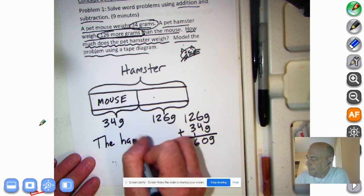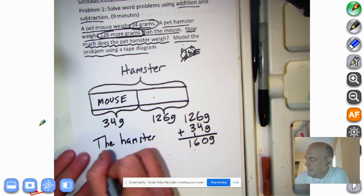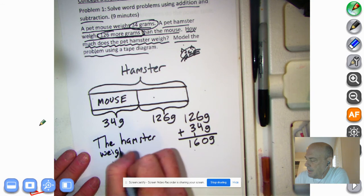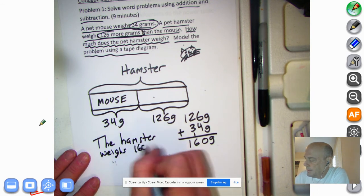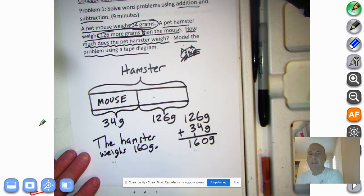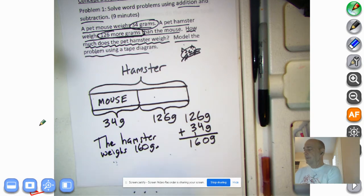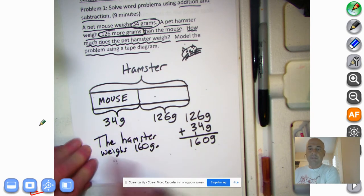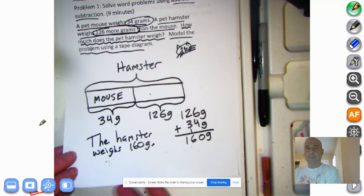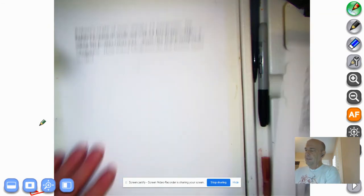So our hamster weighs 160 grams. The hamster weighs 160 grams, okay? If you need to pause, go ahead and pause so you can write all this down. I like you get in the habit of writing your answers as a sentence. So go ahead and pause if you need to. Let's go to number 2.